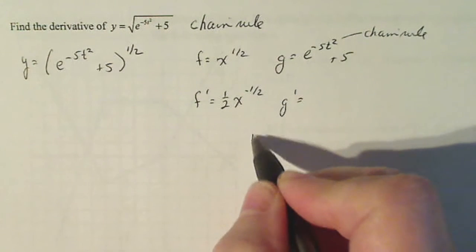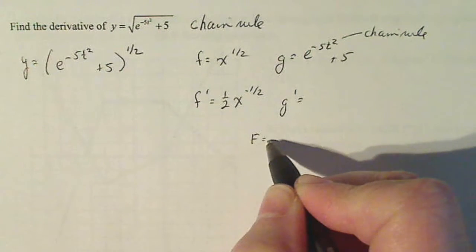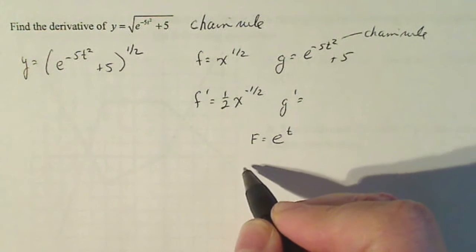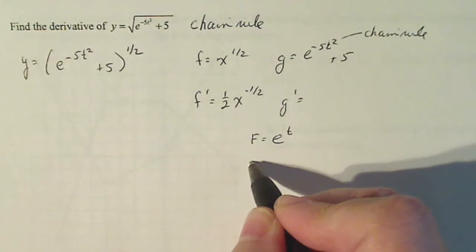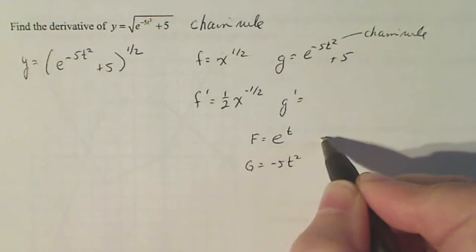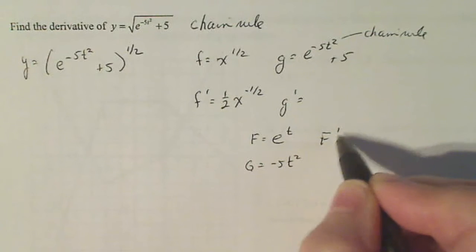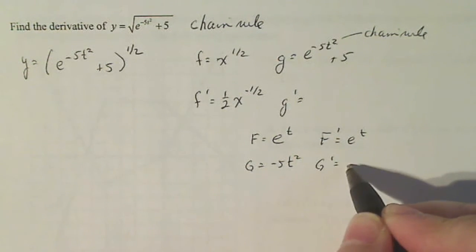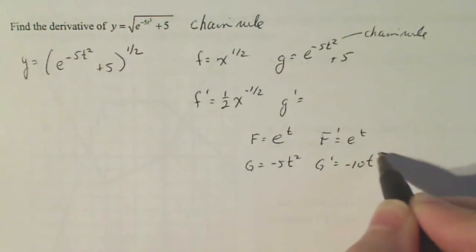So in like manner, I'm gonna use capital F now for the outside function. So capital F, the outside function, is e to the t and then capital G is the inside minus five t squared. Now F prime is e to the t. It's the easiest one. G prime uses the power rule minus 10t.